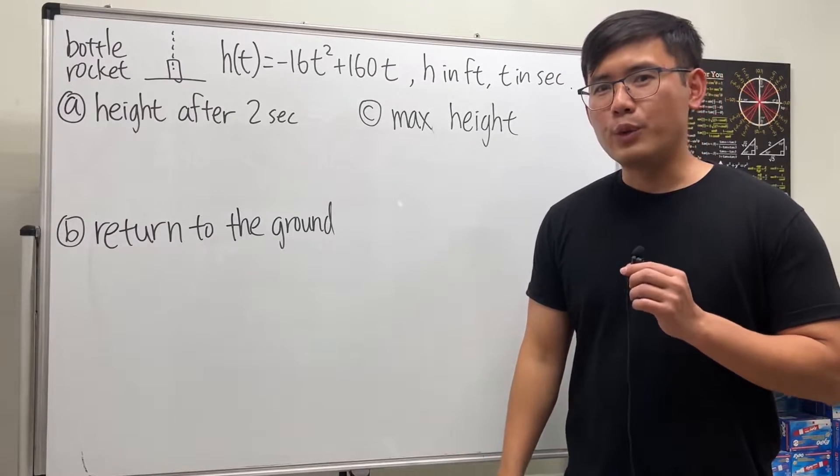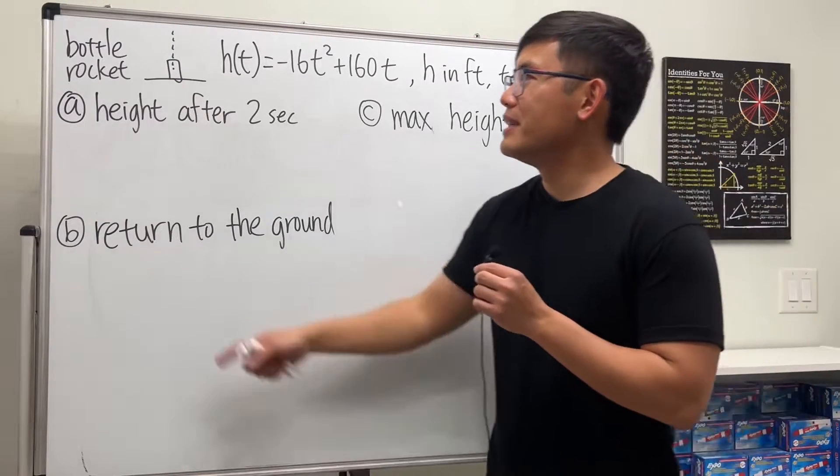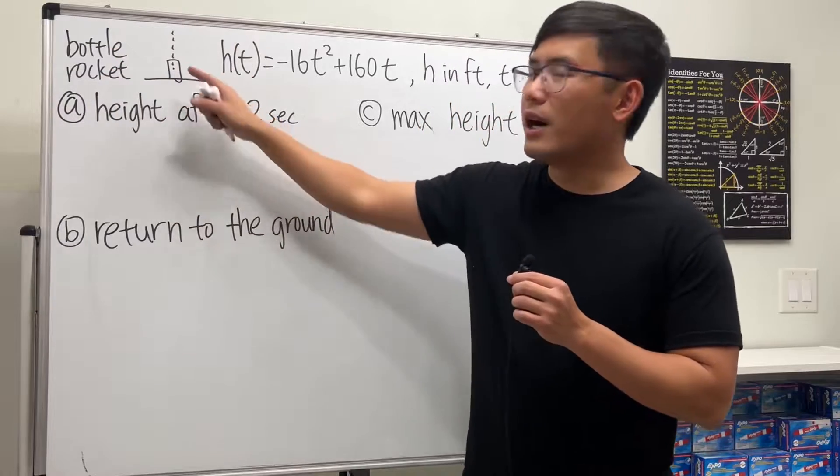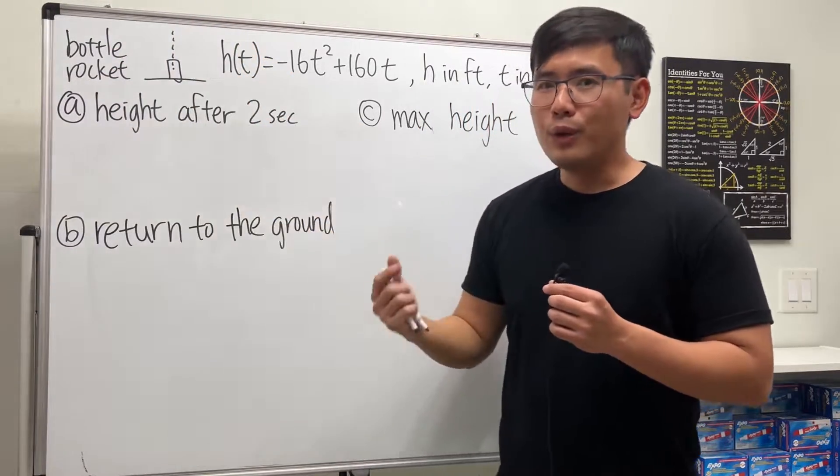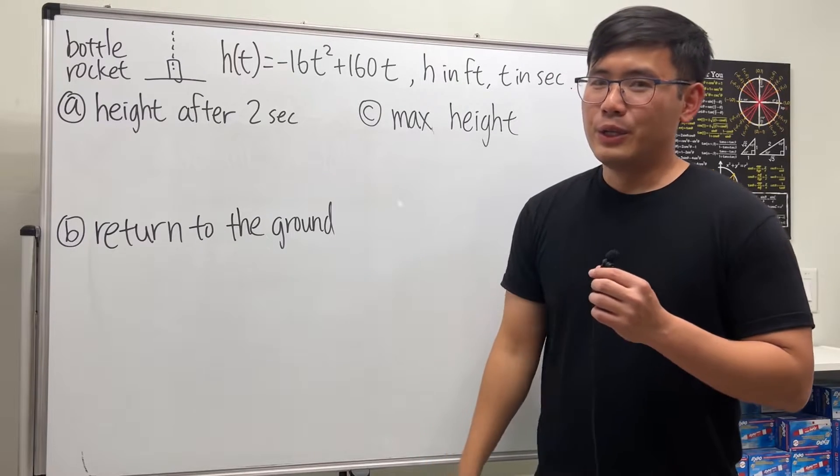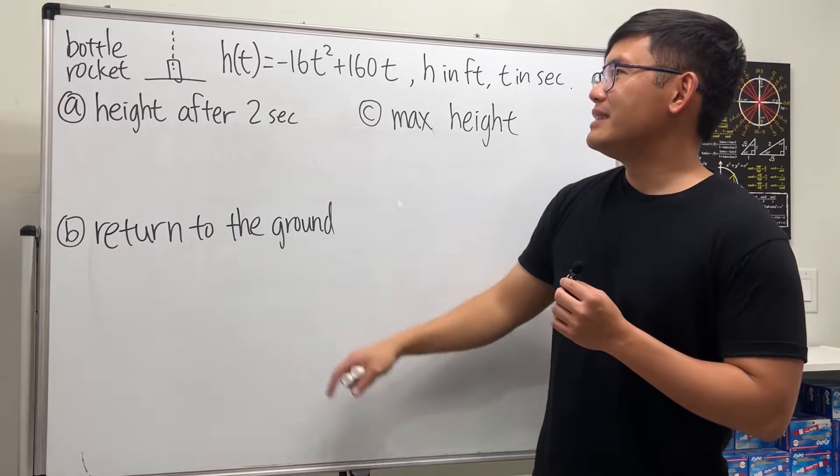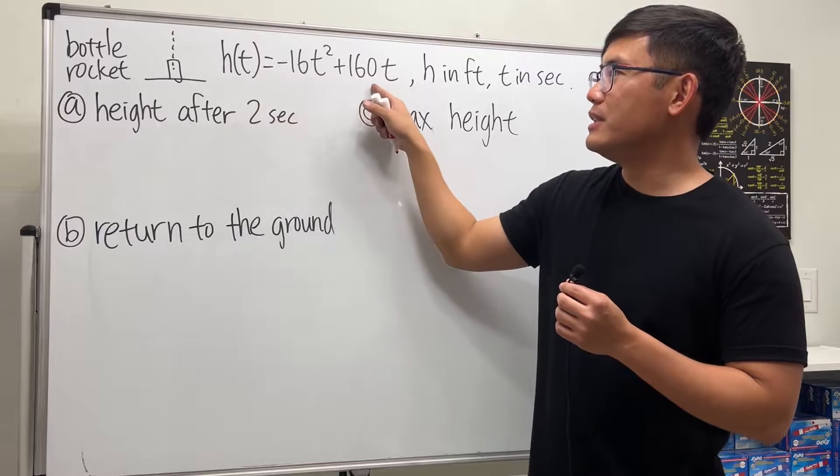This is a very standard quadratic equation application. We have a bottle rocket on the ground that we're going to launch vertically. We assume there is no air resistance, and the height of the rocket is given by this equation.